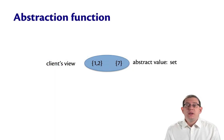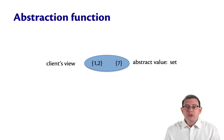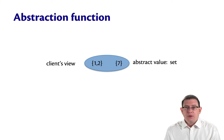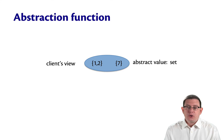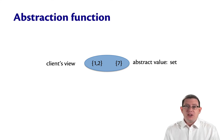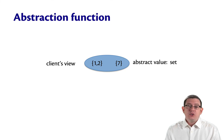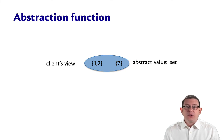One of the reasons that the abstraction function is so important is that it tells us how to understand the data abstraction from the client's point of view. Think back to our sets. From the client's point of view, these are just sets — the client doesn't know anything about the list implementation underneath the hood. So it just looks like the set {1, 2} or the set {7} to the client.